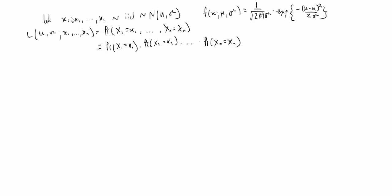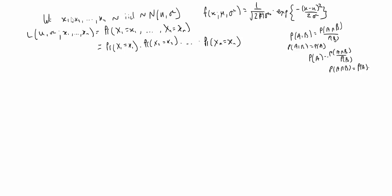To justify this, recall that the probability of A given B equals the probability of A and B over the probability of B. Now if A is independent of B, then the probability of A given B simply equals the probability of A, which means that given B has occurred, the probability of A is unaffected. By rearranging, we get that the probability of A and B is just a product of the probability of A and the probability of B.